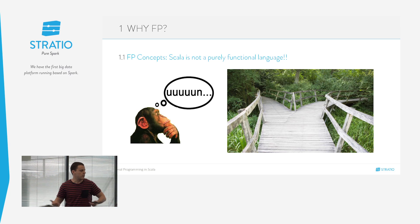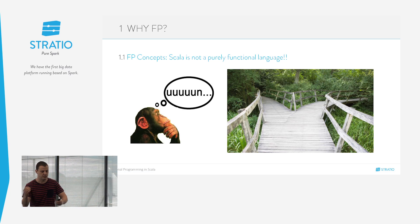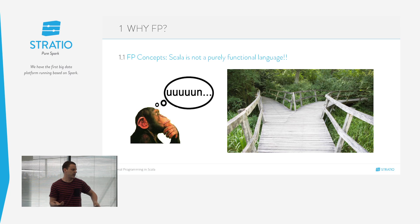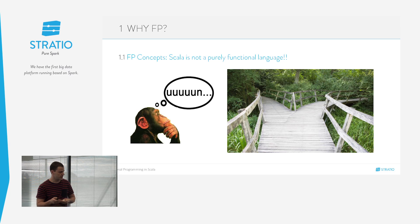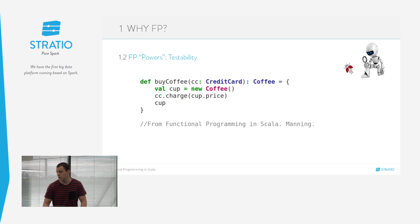En Scala hay muchas formas de hacer las cosas, eso es ventaja para unos e inconveniente para otros. Cuantas más herramientas tenemos, dependiendo de lo que sabe hacer una persona, se pueden hacer más cosas. La idea es ir usando esas herramientas del lenguaje poco a poco, viendo para qué valen, e intentar siempre tirar por el camino funcional. Si tiramos por ese camino, vamos a tener una serie de superpoderes o ventajas.